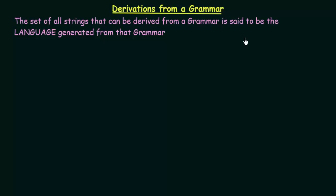In the last lecture, we studied about grammars. We also saw some types of grammars and how grammars are formally defined or described. In this lecture, we will be seeing about derivations from a grammar.